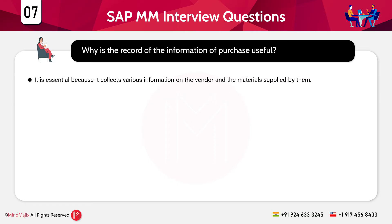The next question is: why is the purchase information record useful? It is essential because it collects various information on the vendor and the materials supplied. For instance, the current price at which the vendor is selling the material is recorded in the purchase information record.